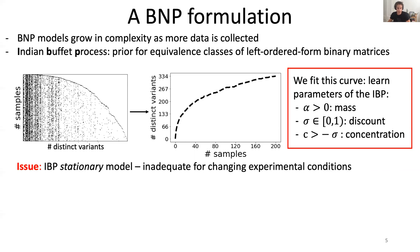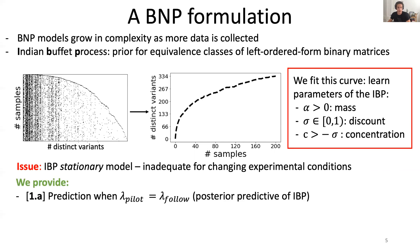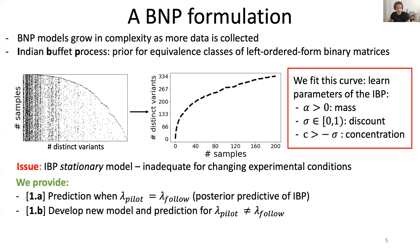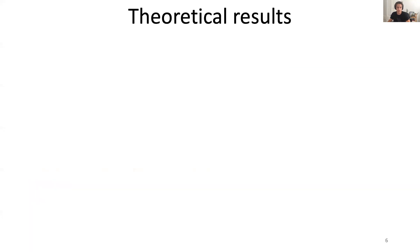One issue of the IBP as-is is that it is a stationary model — that is, it is inadequate for changing experimental conditions. Here we fix this issue. We provide prediction under fixed experimental conditions using the posterior predictive of the IBP, but we also develop a new model and prediction for the case in which experimental conditions are allowed to change. Last, we use these predictions to inform optimal experimental design, our original goal.